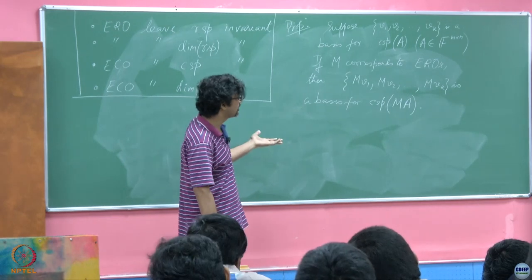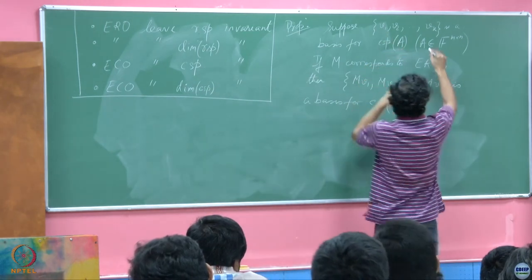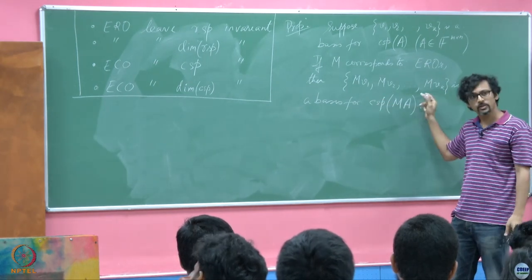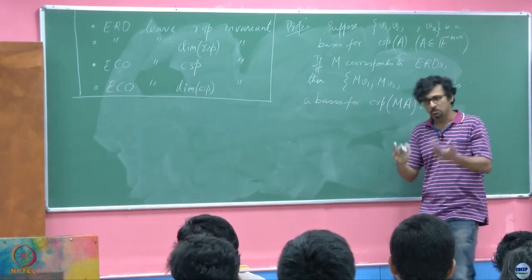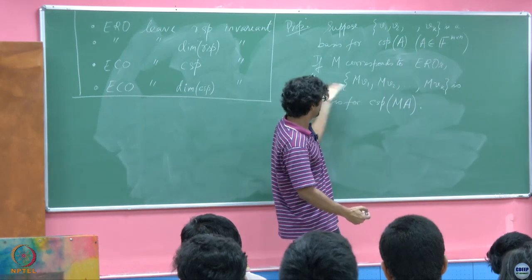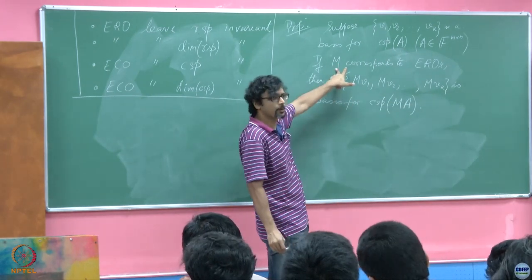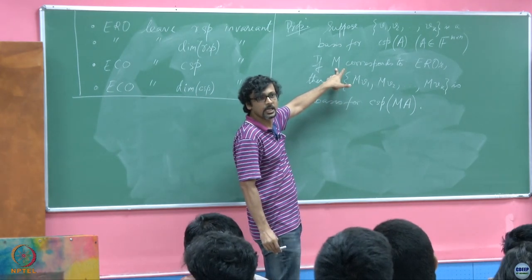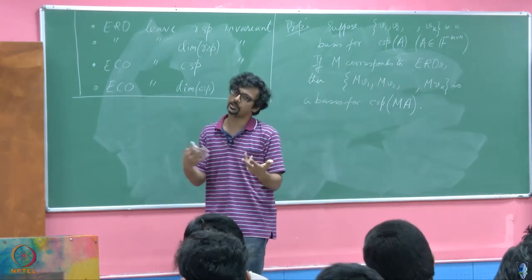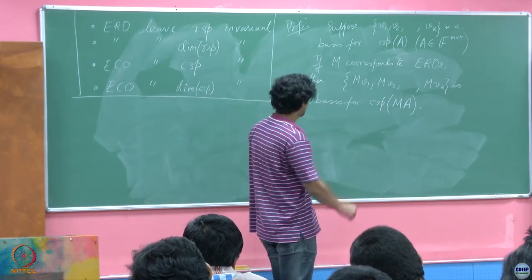Not only have I said that if the column span of A has dimension k then the column span of MA also has dimension k, but I have also explicitly told you that if you know a basis for the column span of A, then you also know a basis for the column span of MA, where M corresponds to elementary row operations. This means M is invertible — each of those elementary row operations is captured by some invertible matrix. This is the claim, and we are going to try and prove it now.